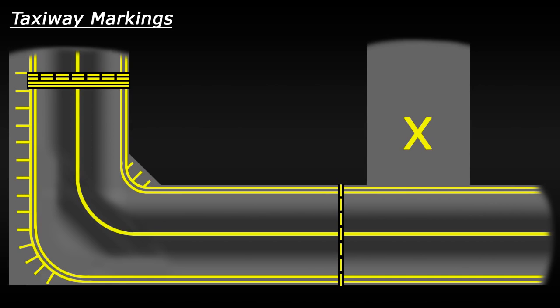For example, if an aircraft is traveling in this direction, it would need to hold and wait for clearance from air traffic control before passing this hold point.